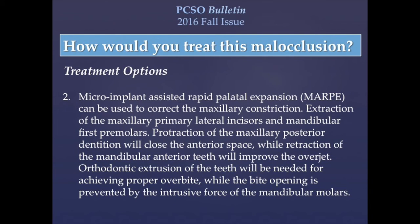The second option would be using a micro-implant expander, known as MARP, to correct the maxillary constriction. The maxillary primary lateral incisors will be extracted for canine substitution, and the mandibular first premolars will be extracted for the removal of crowding. The retraction of the mandibular anterior teeth will resolve the crowding and improve the overjet. Orthodontic extrusion of the upper incisors will be needed for achieving proper overbite, while the bite opening can be prevented by the intrusive force of the mandibular molars.